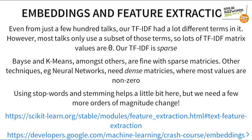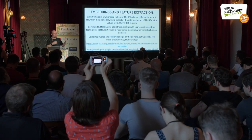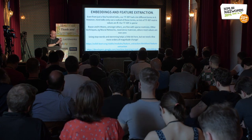Next thing to be aware of is feature extraction and embeddings. Even from just 300 talks, we had 30,000 terms come out, and in the TF-IDF matrix most values were zero — it's a sparse matrix. Bayesian and k-means are okay with 30,000 terms; they can cope and run reasonably fast. Neural networks not so much — they like about 50, maybe 100 inputs total. We can use stop words and stemming to get down from 30,000 to 20,000, but that's still a lot more than 50. So if we want to move on to using neural networks, we need to think about ways to reduce the dimensionality. We've already seen a little bit of that with t-SNE.